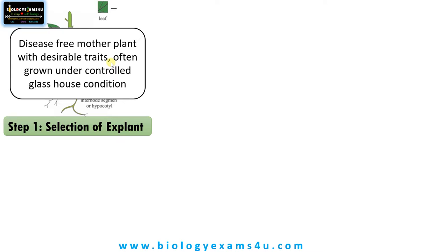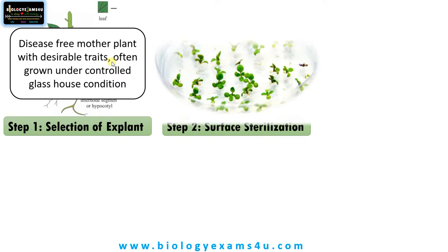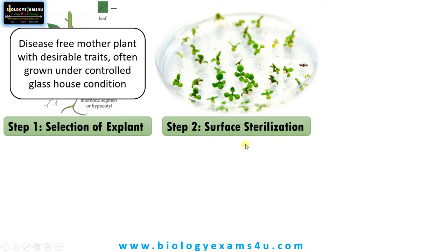We select the mother plant and from it we isolate the explant, which may be a leaf, root, nodal segments, etc. This is followed by surface sterilization. The major problem with plant tissue culture is microbial contamination, so at each step we should be very careful to avoid microbial contamination.